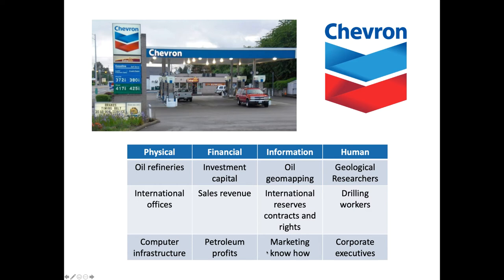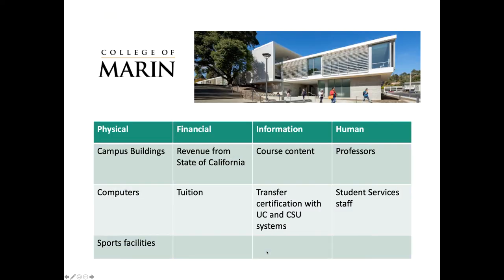Chevron also needs informational resources like oil geo-mapping data, international reserves, contracts and rights to extract petroleum in other countries, and marketing know-how — which explains why Chevron consistently operates some of the cleanest and best-run gas stations on the freeway. And of course, Chevron has human resources ranging from geological researchers and drilling workers to corporate executives and local gas station employees. Those are examples of the four resource classes Chevron needs to be successful.